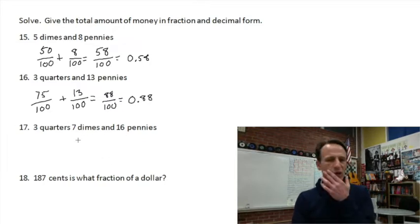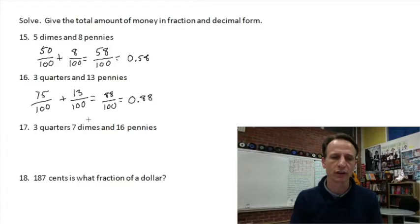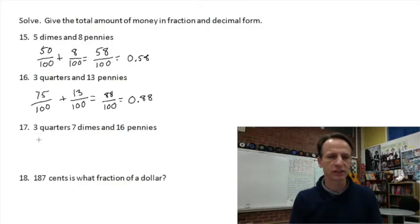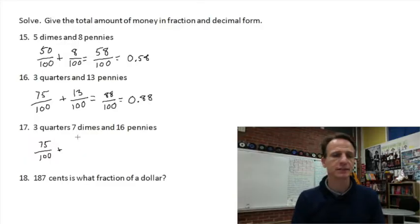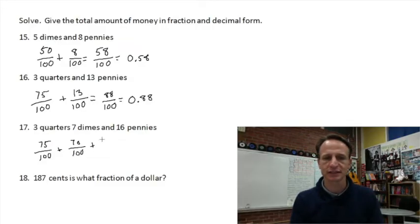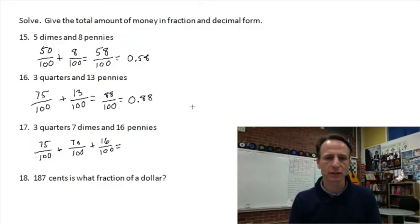This next one goes over a dollar, so we'll need to think a little more. Three quarters = 75 hundredths, 75 cents. Seven dimes = 70 cents = 70/100. And 16 pennies = 16 cents = 16/100. Add all these together in column addition form so you can see it clearly.